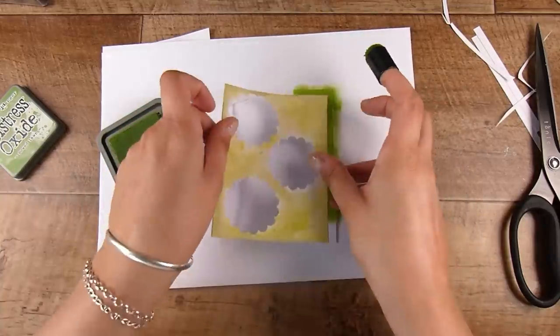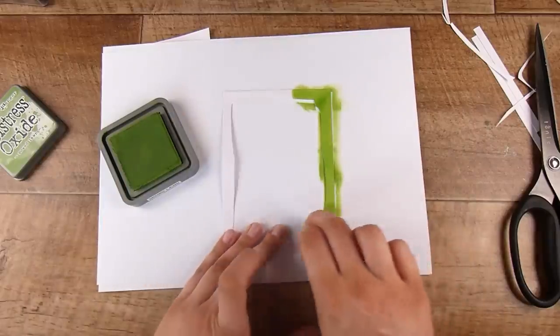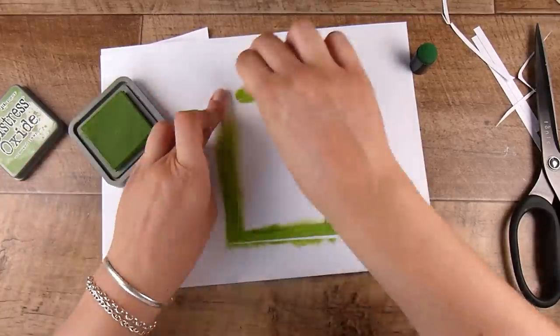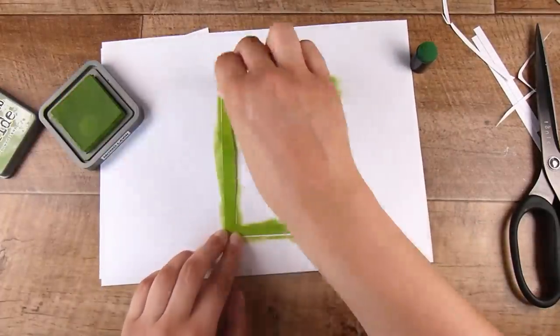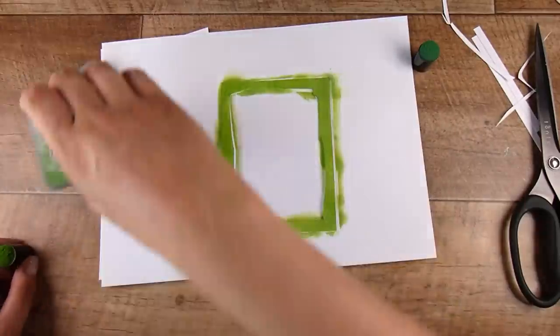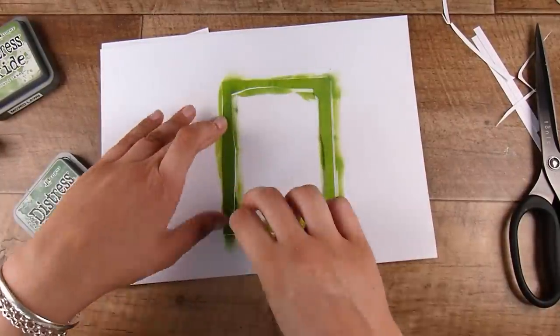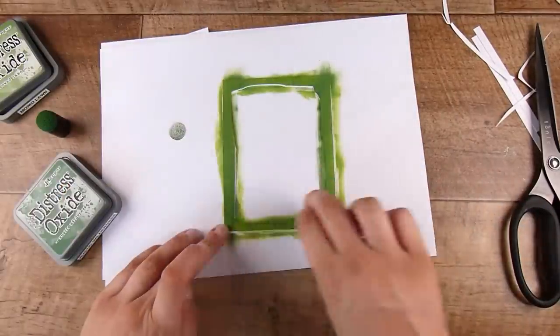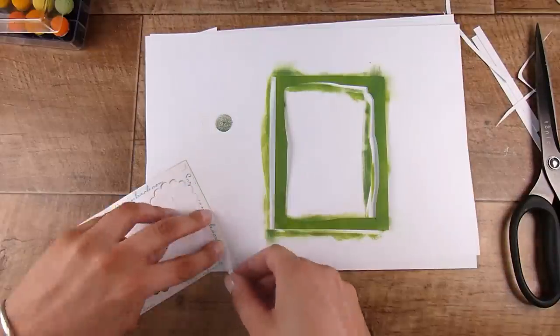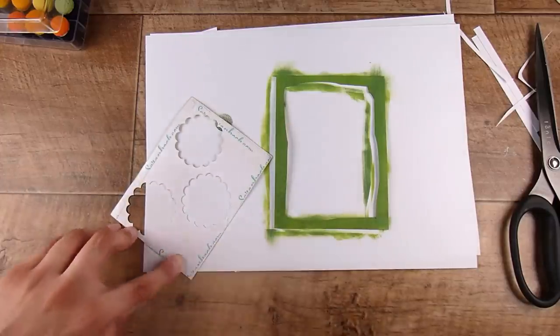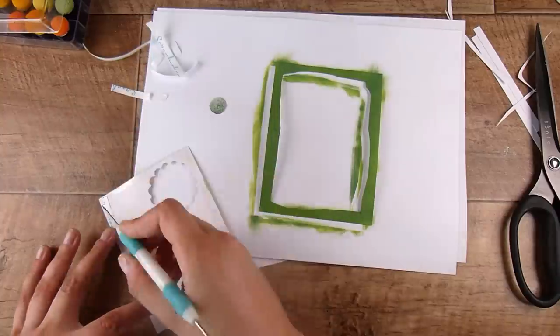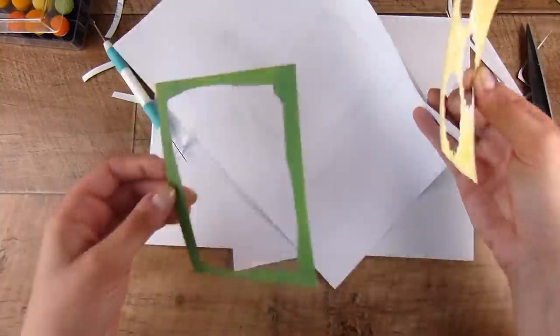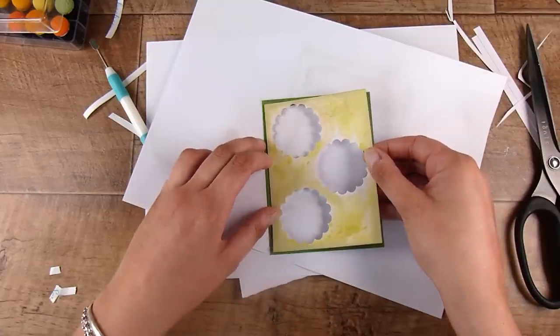I'm going to start off by using some Mowed Lawn Distress Oxide ink. I'm actually going to move into Rustic Wilderness because this was a little bit too light green. I'm just picking up some of the greens that are in the owls. I love the looks on their faces, their character is just a really cute little look.